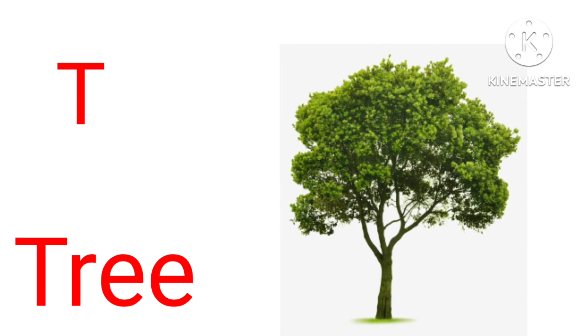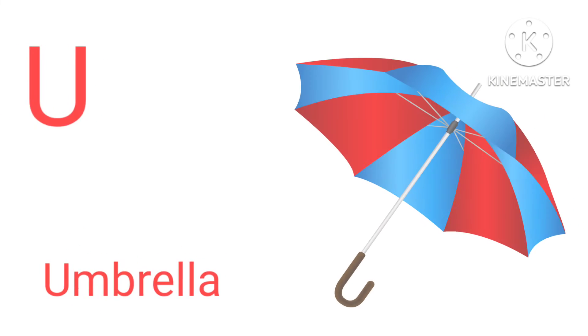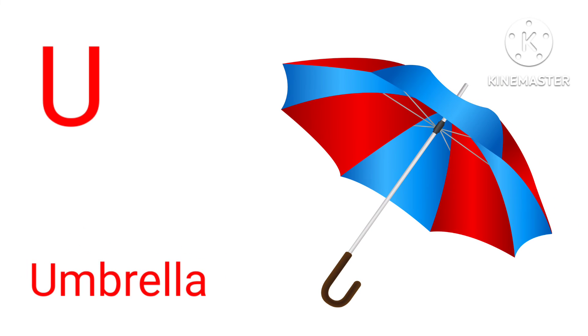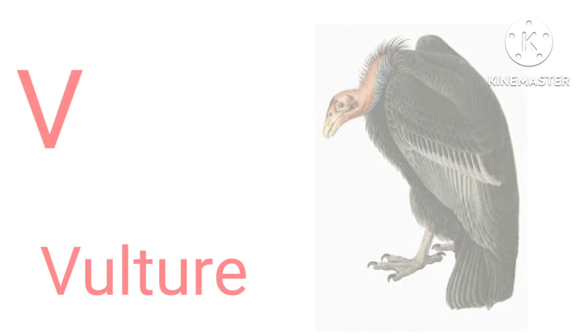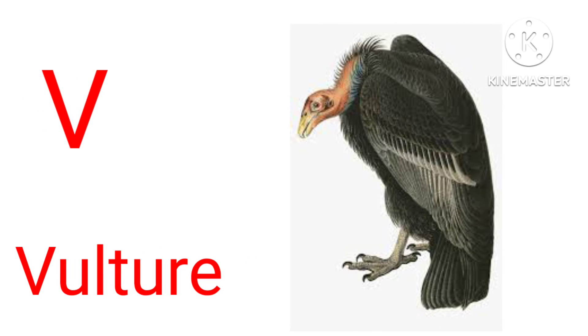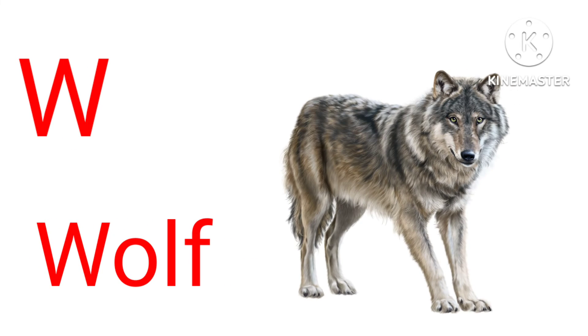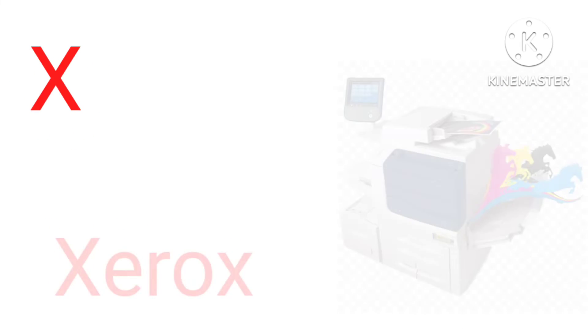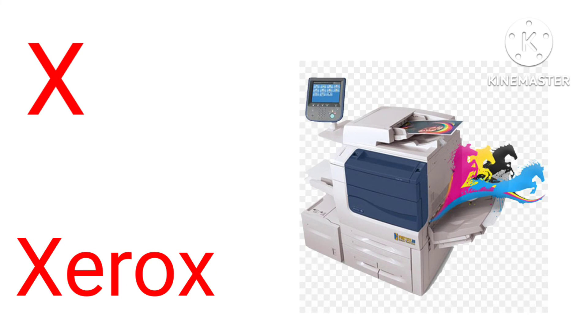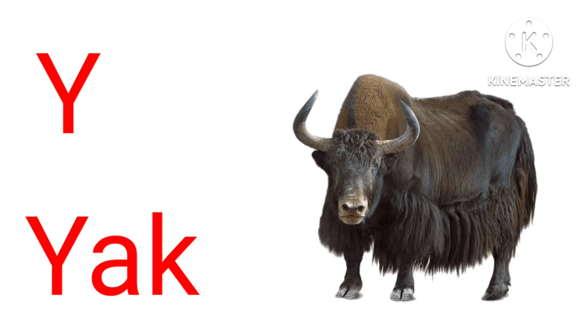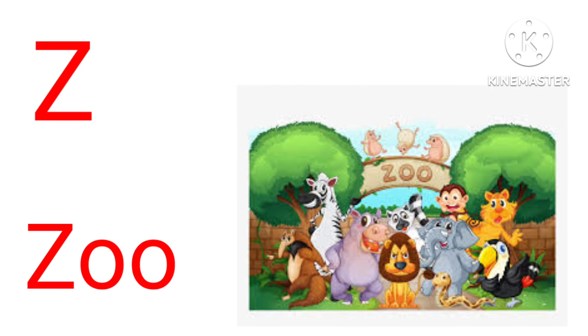T for tree, U for umbrella, V for vulture, W for wolf, X for xylophone, Y for yak, Z for zebra.